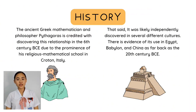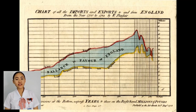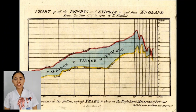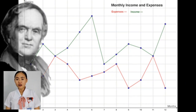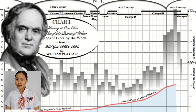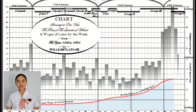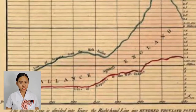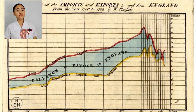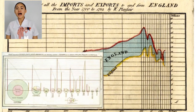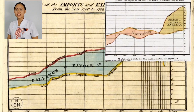The broken line graph, also known as a line chart or line graph, has its roots in the 17th century. It evolved from graphical representations used by mathematicians. The concept gained prominence with the work of Scottish engineer and political economist William Playfair in the 18th century. In 1786, he published the Commercial and Political Atlas, a work containing innovative graphs and charts that helped illustrate economic and statistical data more effectively.